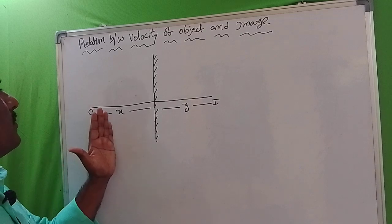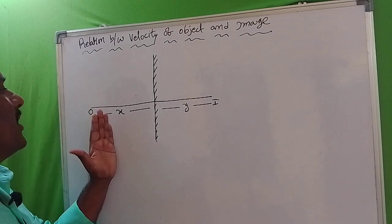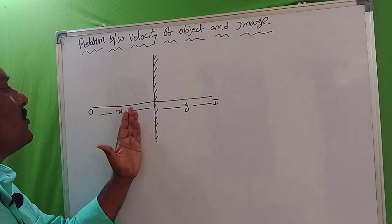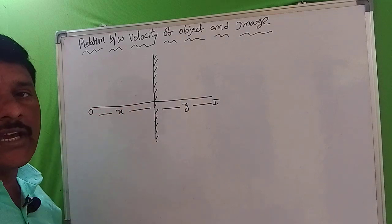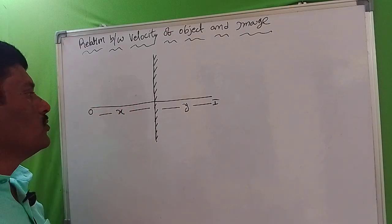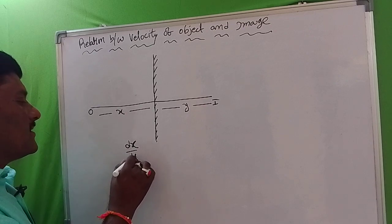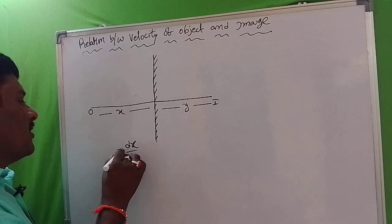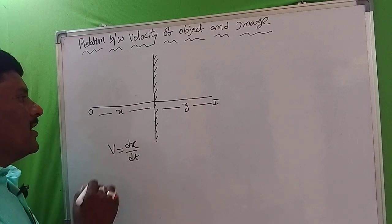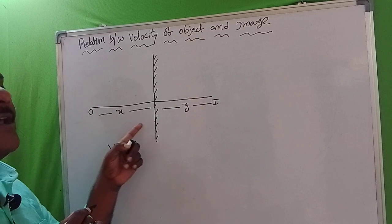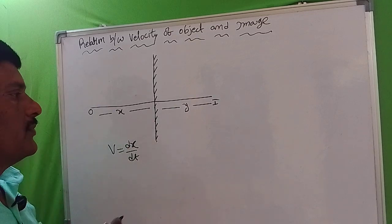Of course, we take the derivative with respect to time. And dx by dt is nothing but velocity — the rate of change of position is also a velocity.